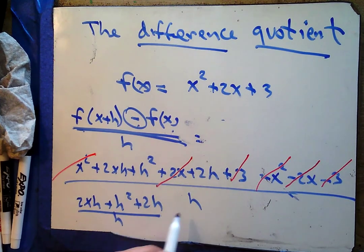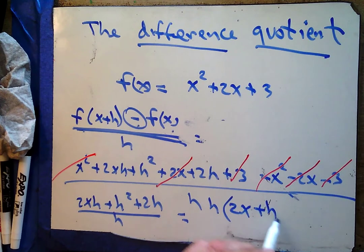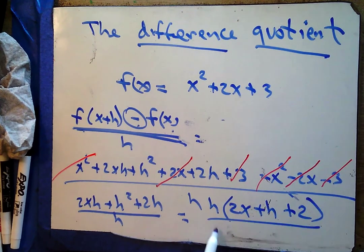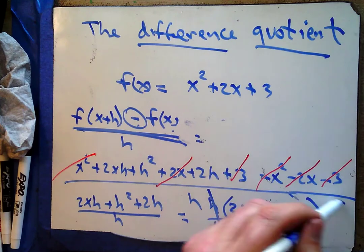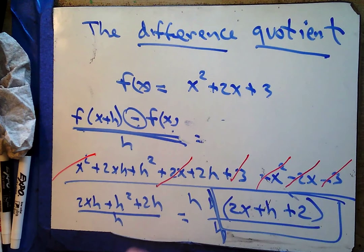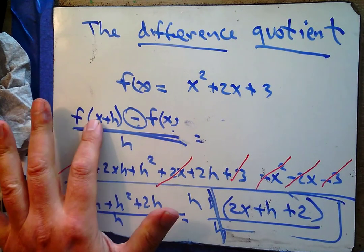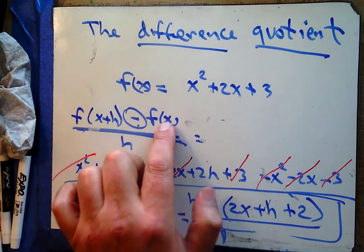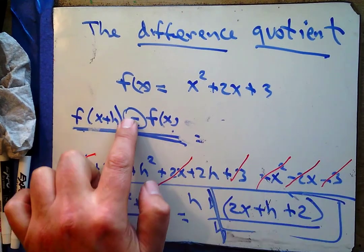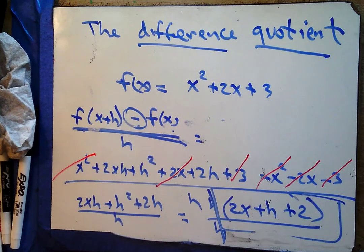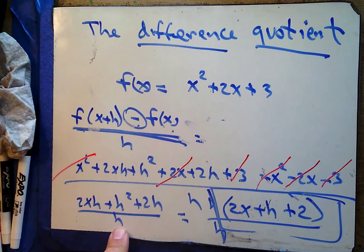I notice each term on top has an h in it, so let's GCF factor that out to get h(2x + h + 2) over h, and then we can cancel. My answer is 2x + h + 2. Don't be scared if your answer has an h in it — that's fine. The steps are: find f(x+h), find f(x), subtract (distributing the negative), combine like terms, then factor h out of the top and cancel.